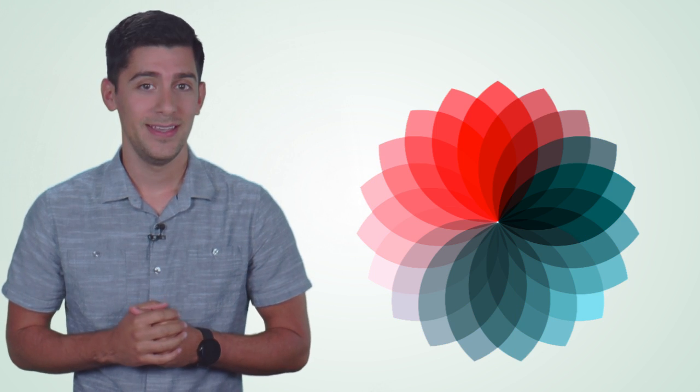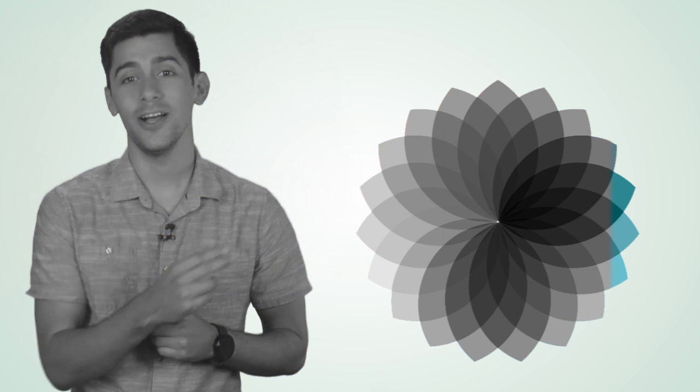This is what red-green colorblindness would look like. It is most common, followed by blue-yellow. And the rarest of all, complete colorblindness.